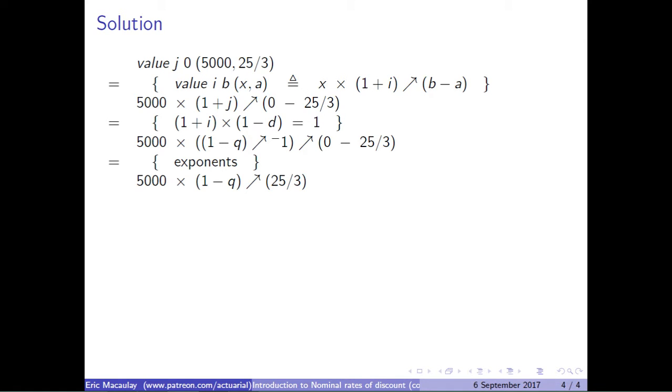Using the laws of exponents we get that we have 5,000 times 1 minus Q to the power of 25 over 3. But what is Q?